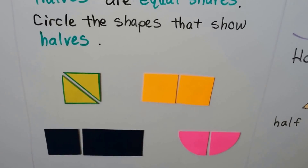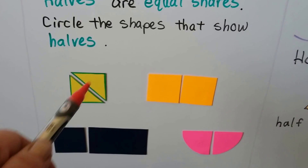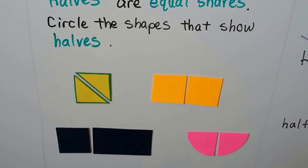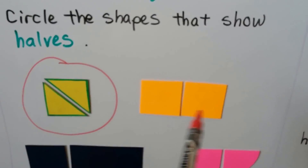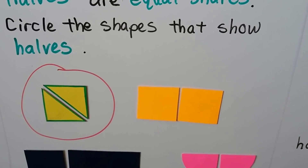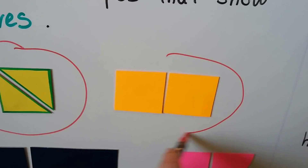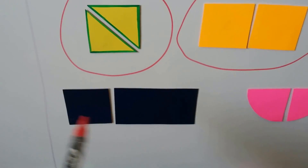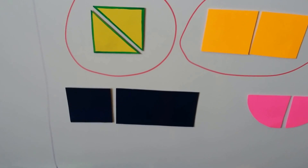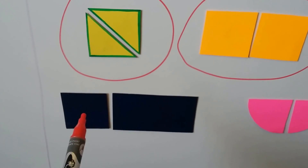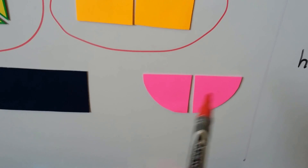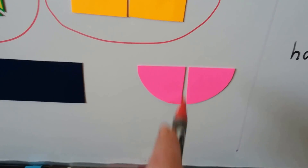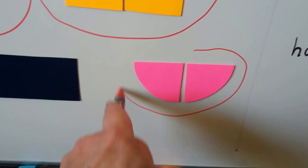Circle the shapes that show halves. Does this show two equal shares of a square? Yes, it does, so we can circle that one. Does this show two equal shares of a rectangle? Yes, that does too. Does this show two equal shares of a rectangle? That's a big side and a little side, so no, those aren't equal. Here we have a semicircle — does this show equal shares of the semicircle? Yes, it does. It's cut right in half, separated right in half, so those are equal shares of this shape.